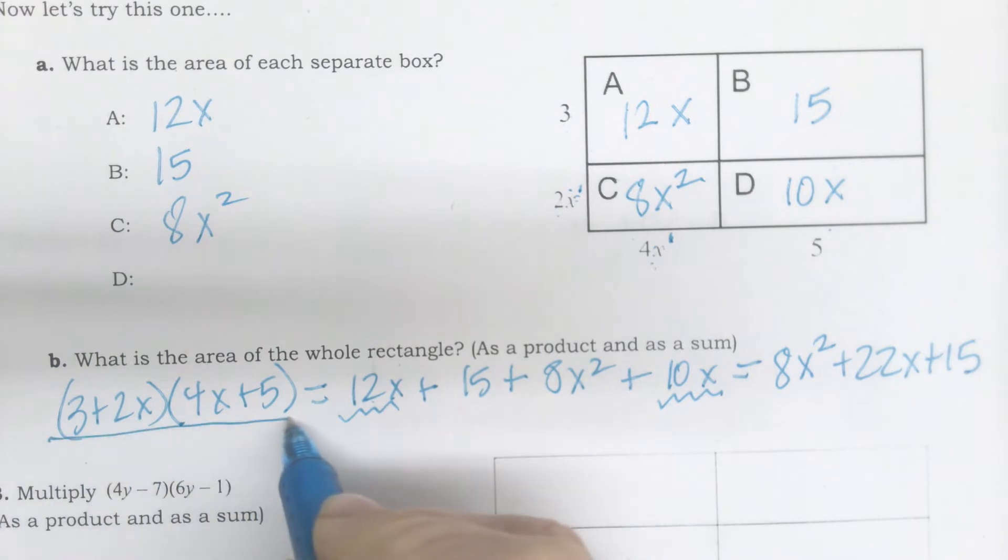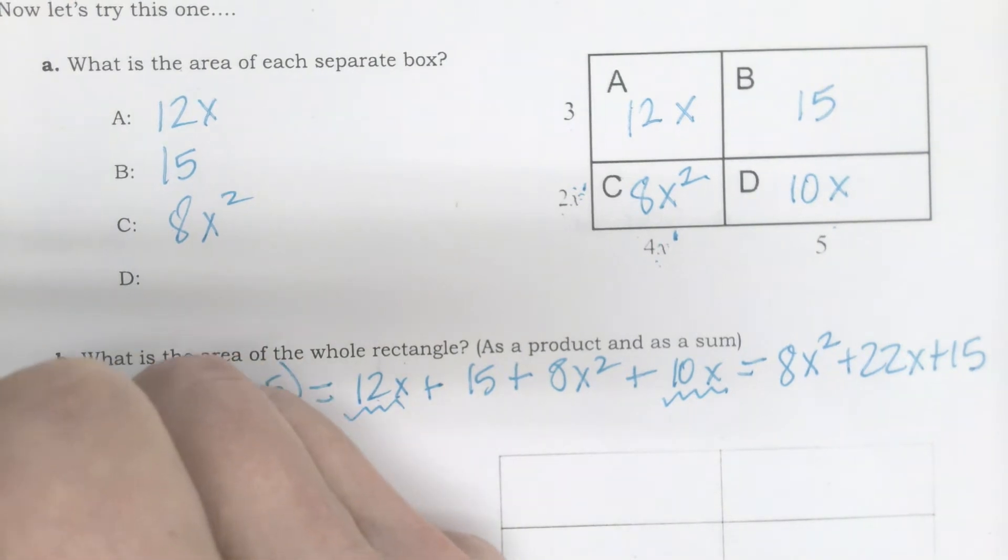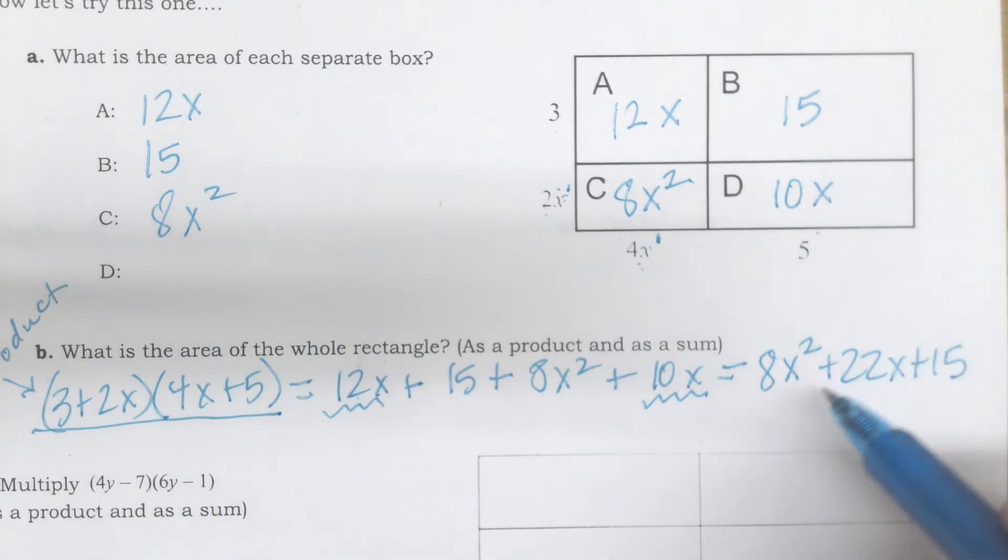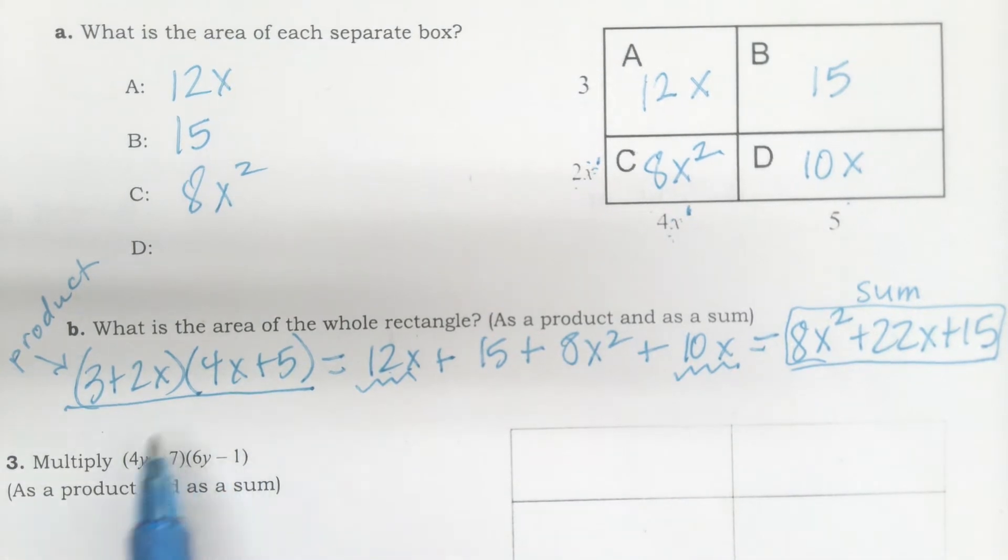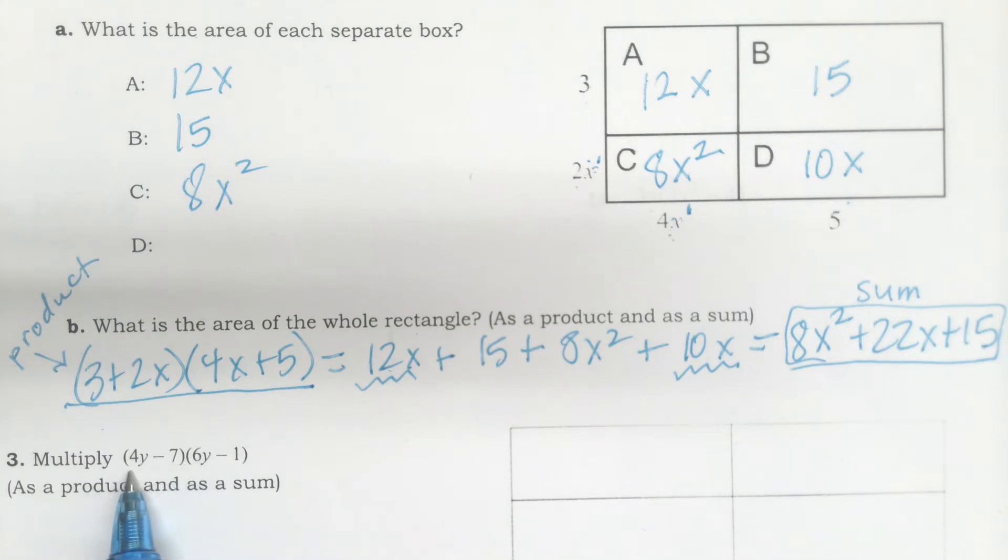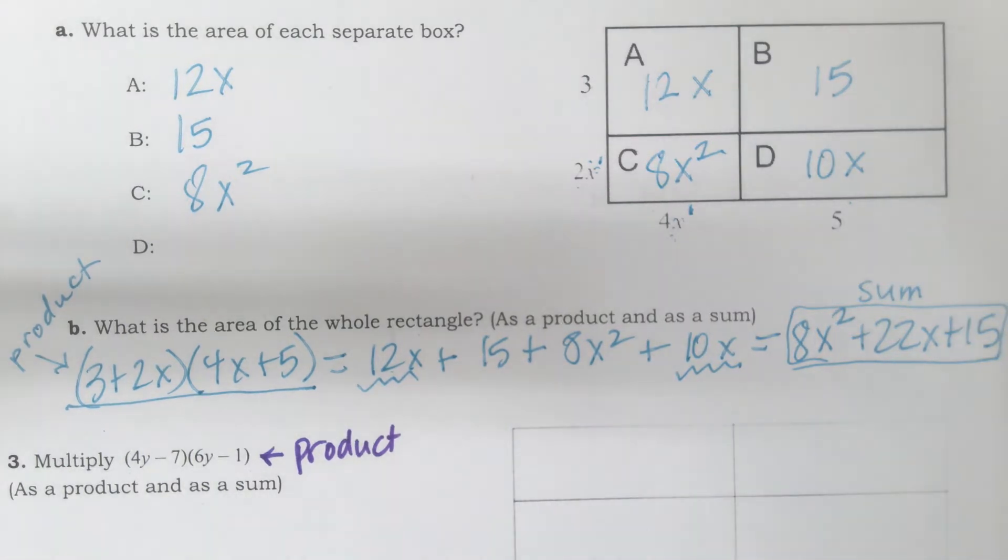This piece is known as my product, where I multiply them together. This piece at the end is known as the sum. We're going to be talking a lot about the product and the sum. So know the difference. Product is when you write it as a multiplication problem. My job is going to be to find the sum.